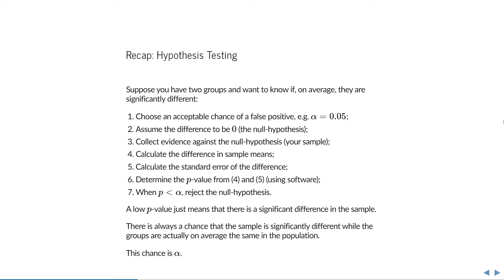To understand the corrections and why they work, let's start with a brief recap of hypothesis testing. Suppose we have two groups and we want to know if, on average, they are significantly different. First, we start by setting alpha, the level of significance, and this is actually the acceptable chance of a false positive. So if we set alpha to the commonly used value of 0.05, then that means we accept a 5% chance of getting a false positive. Next, we assume the difference to be 0, which is the null hypothesis. Then we collect evidence against the null hypothesis, and this is your sample.